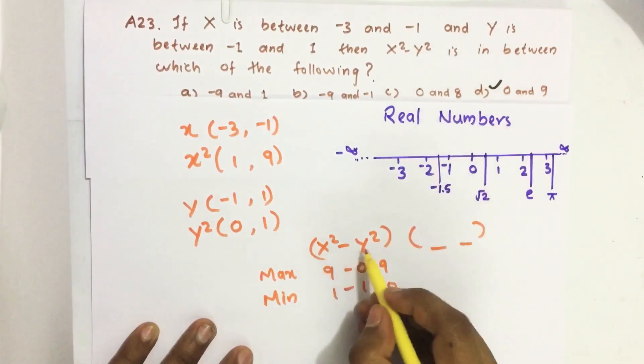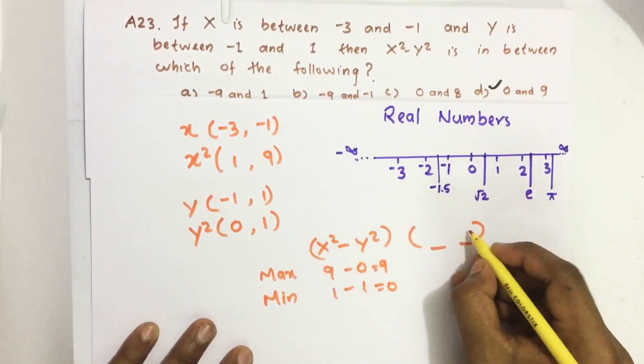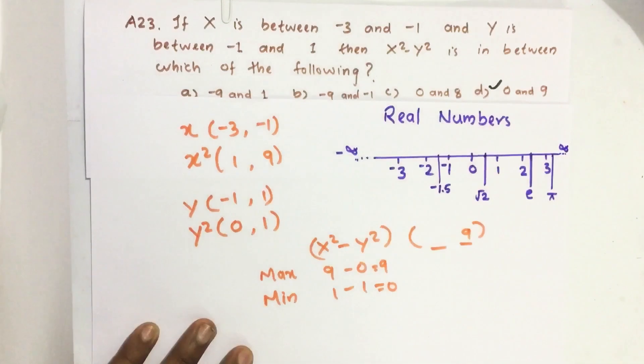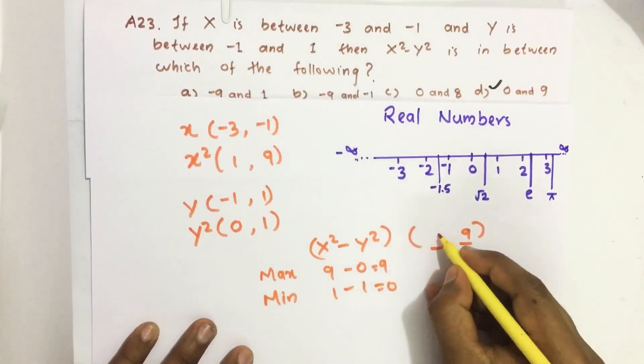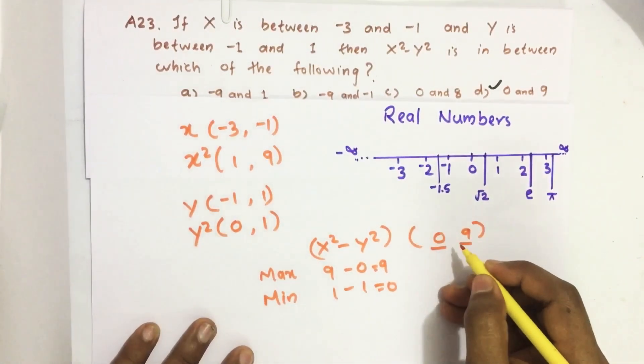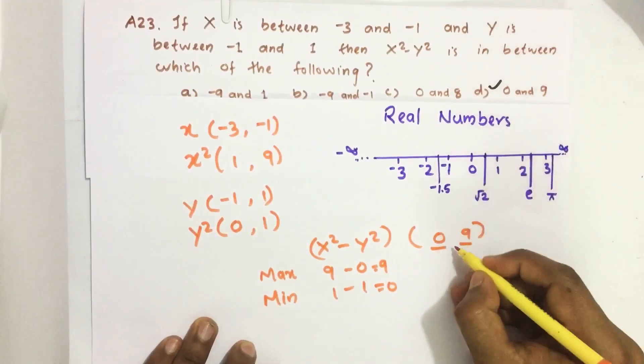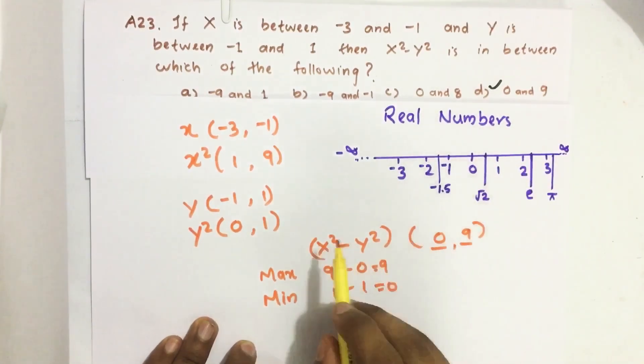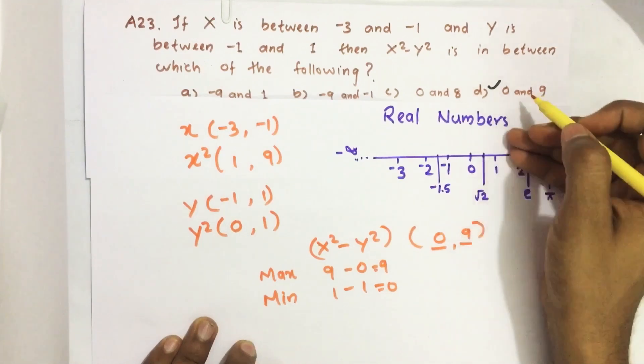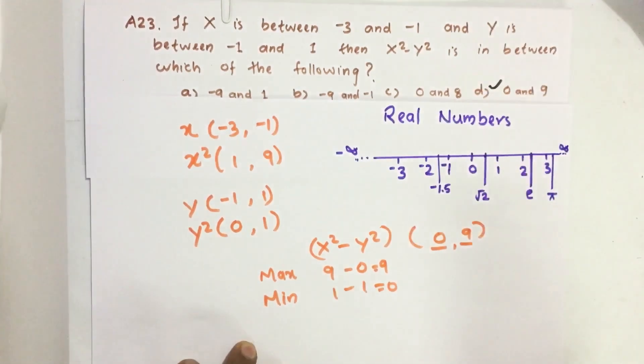So we get the limit of this x² - y², here maximum value is 9 and minimum value 0. Therefore it is in between 0 and 9. x² - y² will be in between 0 and 9. Our answer is option D. If you have any suggestions please do comment, don't forget to like, share and subscribe our channel. Keep loving and supporting us, Jai Hind.